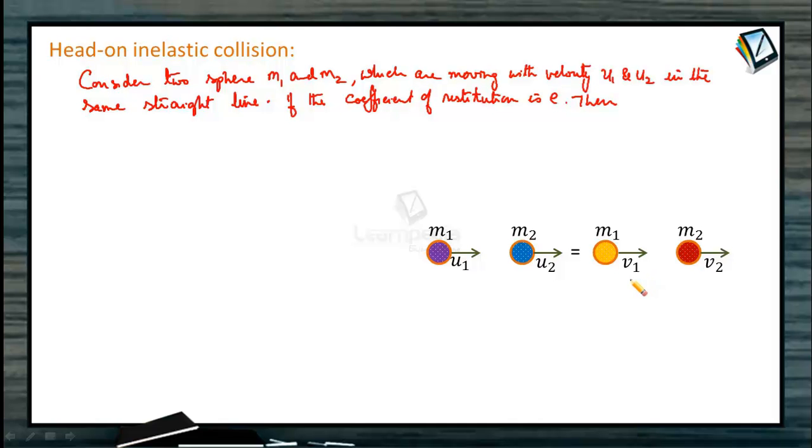So we can simply use the law of conservation of linear momentum. By applying the law of conservation of linear momentum, what we are going to get? m1 u1 plus m2 u2, momentum before collision, is equal to momentum after collision, m1 v1 plus m2 v2. This is equation number 1.